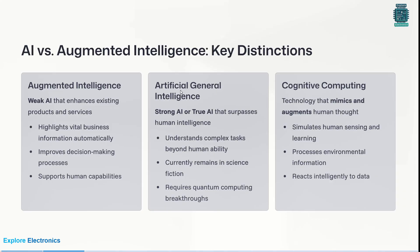What is artificial general intelligence? Artificial general intelligence is strong AI — much higher than weak AI. We also call it true AI, that surpasses human intelligence. It will do what humans do and also surpass human intelligence, understanding complex tasks beyond human ability. Currently, this strong AI or true AI remains science fiction; it is not fully implemented yet and requires quantum computing breakthroughs.